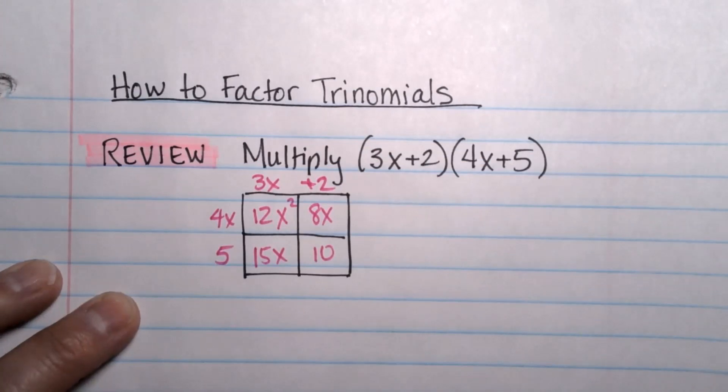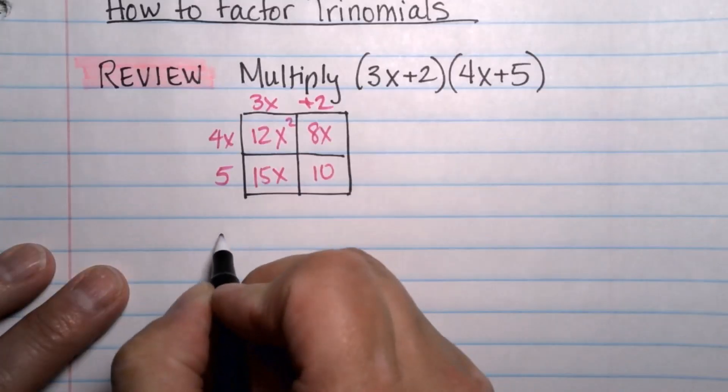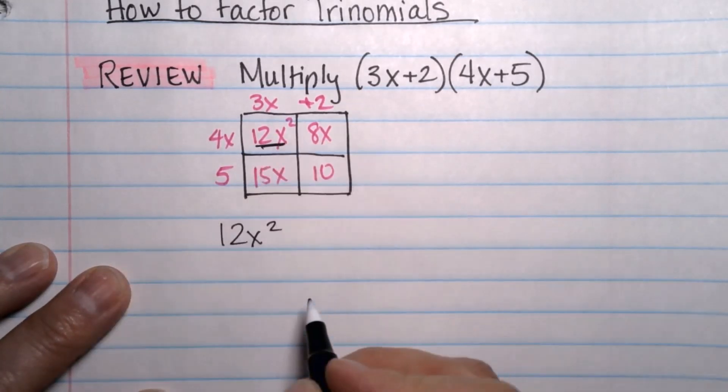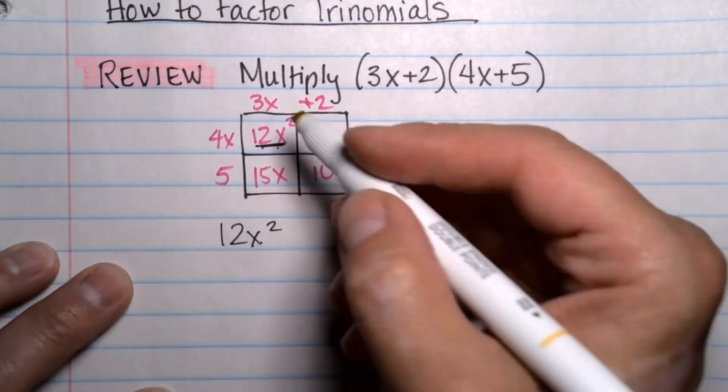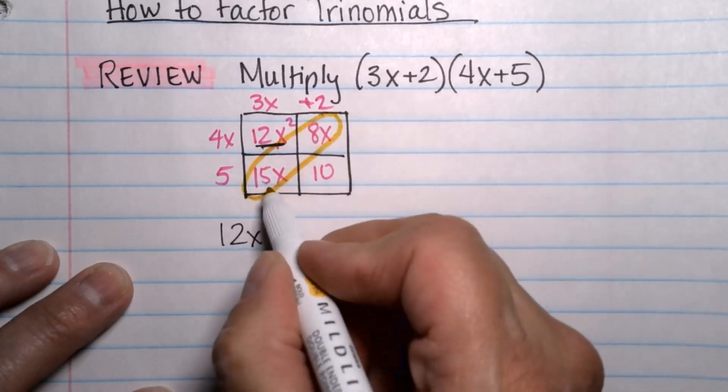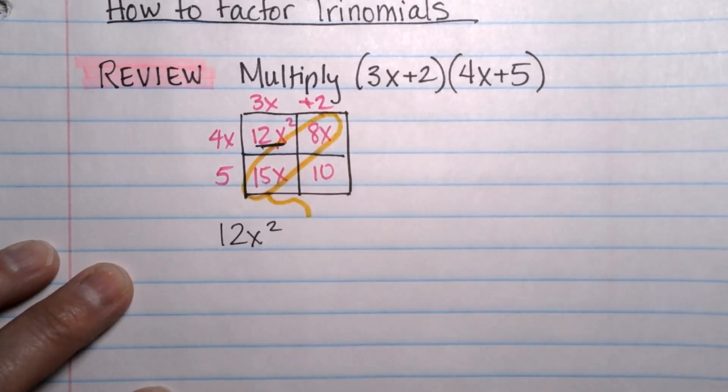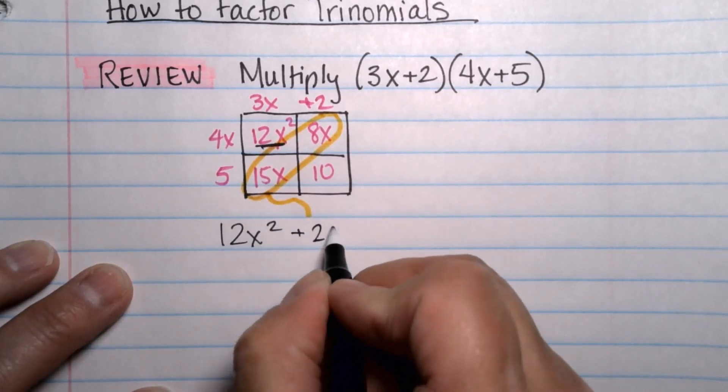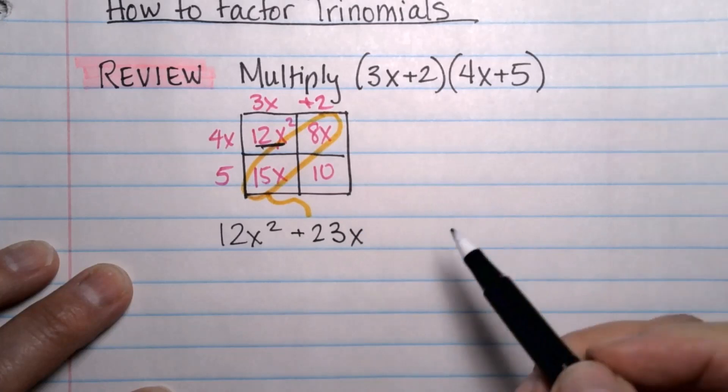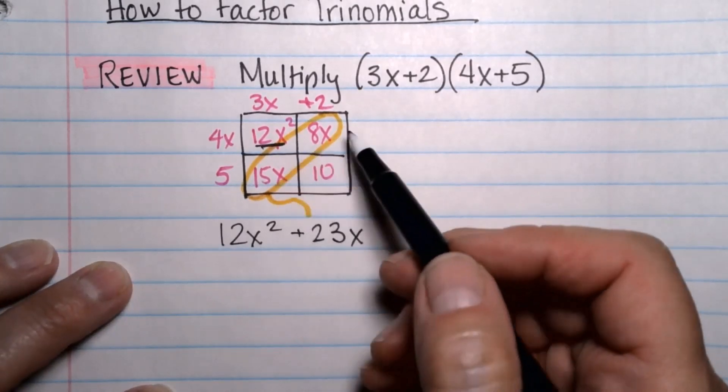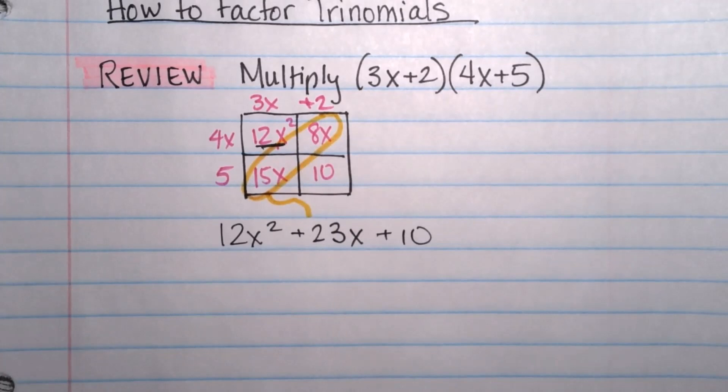When you combine these things you will end up with 12x squared that comes from right here and then you need to combine these middle pieces because they have same like terms. So that's going to be 15x plus 8x which is going to be 23x. You've got to remember where they come from because that's important for the factoring. 15x and 8x is 23x and then you have the plus 10.